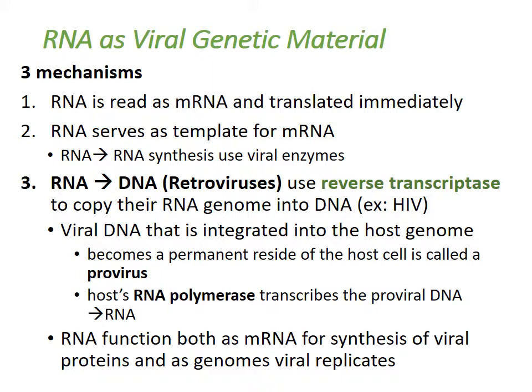Animal viruses that use RNA as viral genetic material can use three different mechanisms. The RNA could be read as mRNA and translated immediately. The RNA could serve as a template for mRNA — they do RNA-to-RNA synthesis using viral enzymes. Or the RNA could go to DNA using a reverse transcriptase to copy the RNA genome into DNA. HIV is an example of a virus that does that.